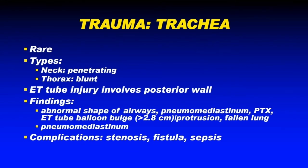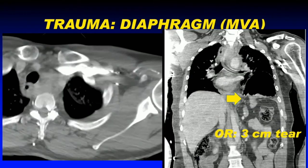Looking at tracheal trauma overall: these are rare injuries with many distractors. In the neck, they are usually penetrating traumas. In the thorax, they are typically blunt traumas seen within one to two centimeters of the carina. Iatrogenic injuries from endotracheal tube intubation are usually in the posterior wall of the trachea. Watch for abnormal shapes of airways and balloons.